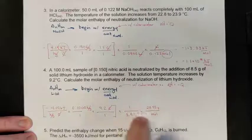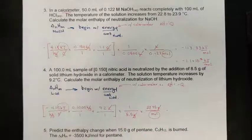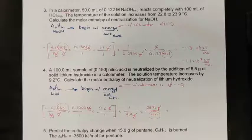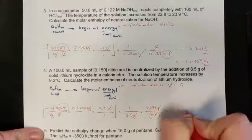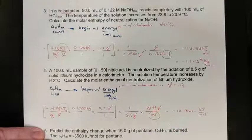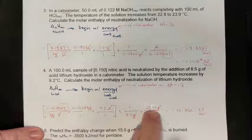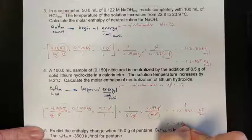So we had slightly less than a one-mole quantity. Grams cancel; units are now kJ/mol. Running through the calculator: 4.19 × 0.1 × 9.2 = 3.85 kJ, divided by 8.5 grams, then multiplied by 23.95 g/mol, gives negative 10.861 kJ/mol. With two significant digits as the limit, the answer rounds to negative 11 kJ/mol.